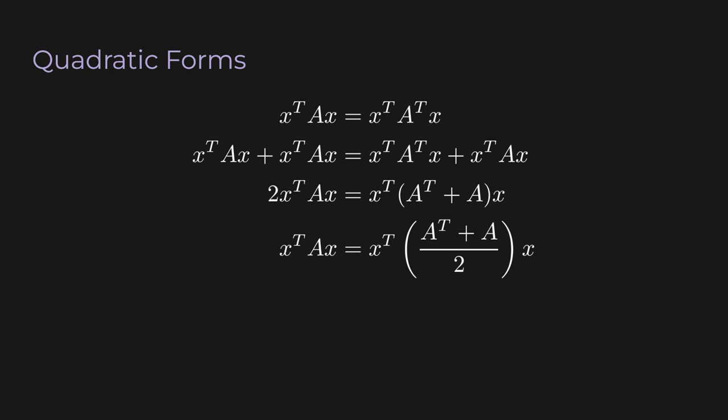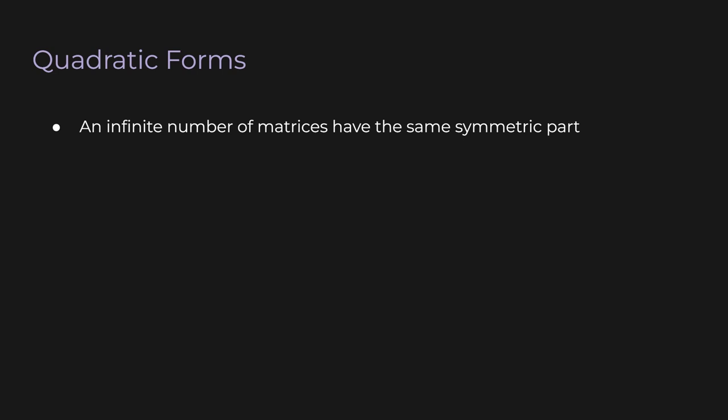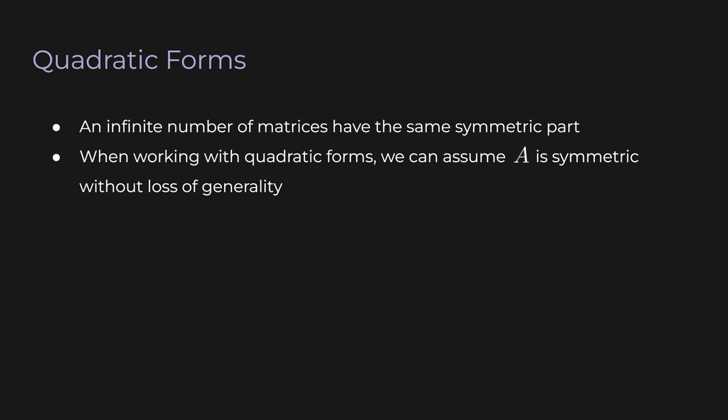The right-hand side is just another quadratic form, but the matrix is A transpose plus A divided by 2, which is a square matrix with the same dimensions as A. Since we made no assumptions about x, for any x at all, using A or using (A transpose plus A)/2 gives the same scalar output. The matrix (A transpose plus A)/2 equals its own transpose and is called the symmetric part of A. An infinite number of matrices share the same symmetric part, so when working with quadratic forms, we can assume A is symmetric without loss of generality.